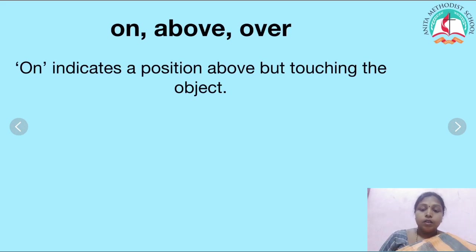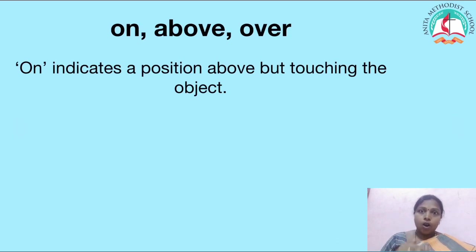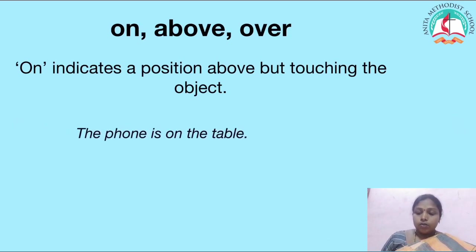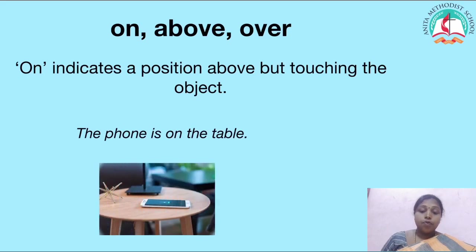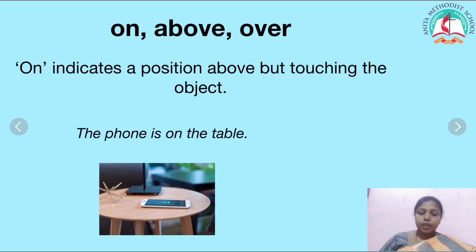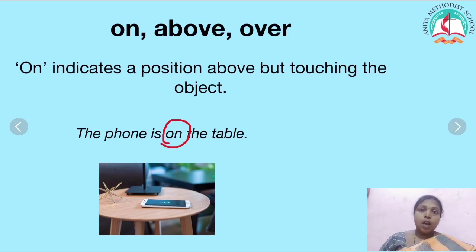On means touching the object. Something which is placed on touches something. Let's see the example: the phone is on the table. Can you see? The phone is touching the table. So when something indicates a position touching the object, we have to use on. The phone is on the table.